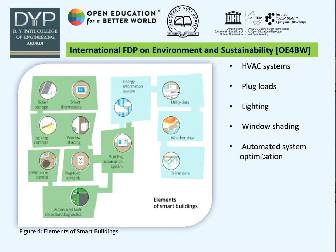The next component is automated system optimization. Unlike traditional building automation systems that work on preset schedules and set points, automated system optimization relies on real-time feedback. It uses ICT technology to collect and analyze the building's operational and energy performance data, then makes anticipatory changes based on external factors such as occupancy patterns, weather forecasts, and utility rates. Cloud-based remote building monitoring is also growing in popularity.